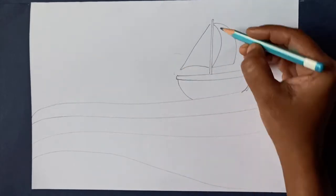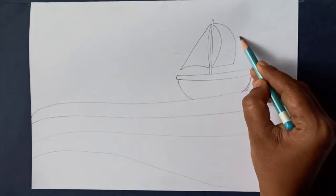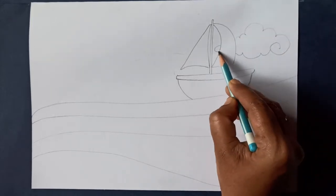Connect it with the angled line. Complete the sail with a curved line. Now let's draw four clouds.